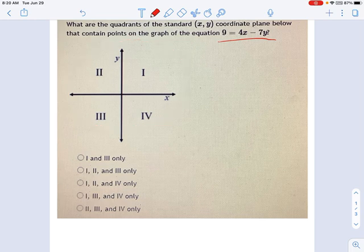And the way we're going to figure this out is just rearrange this equation. Usually we have y on the left, right? So let's do that. Let's add 7y to each side. We have 7y plus 9 equals 4x.